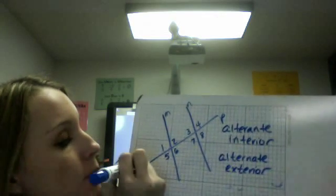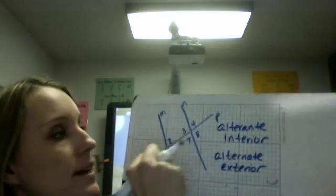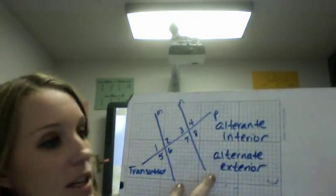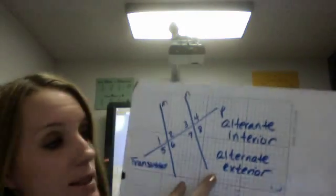first notice on this one that my transversal is this line right here. My two lines that it's intersecting are actually going the other way from some of the previous examples.